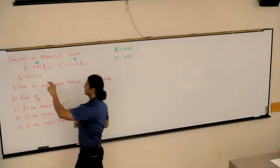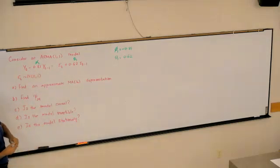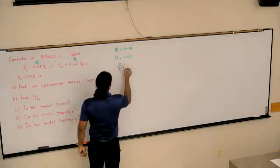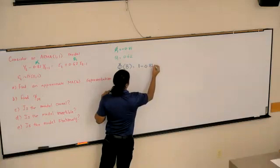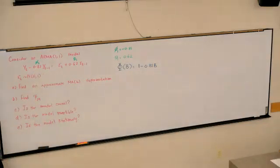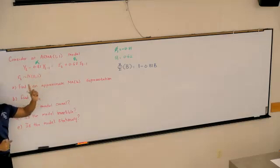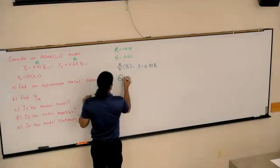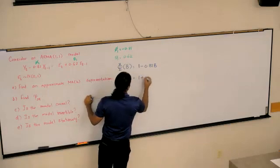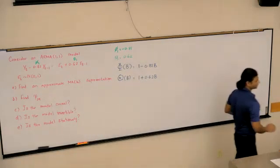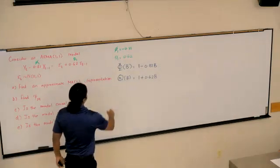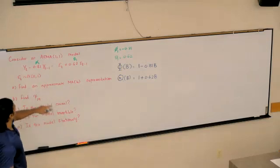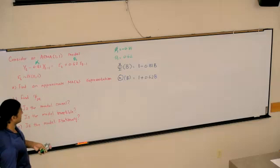What is the characteristic polynomial on the left-hand side? Uppercase phi of B, 1 minus... We just keep it as is. But in terms of the notation that we've defined and derived, we used plus phi1. That is our characteristic polynomial in terms of the backwards operator for the AR side and the MA side.